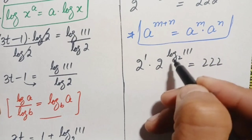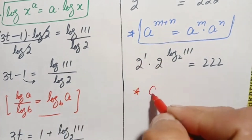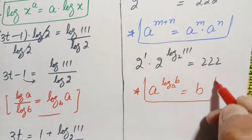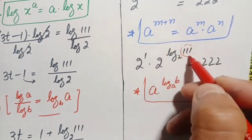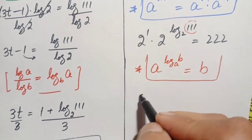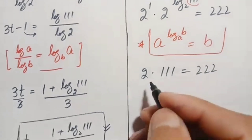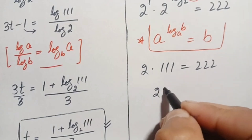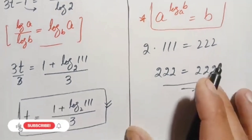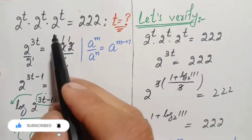For the term 2 raised to the power log of 111 with base 2, we use the result: a raised to the power log of b with base a equals b. So this whole term equals 111. The equation becomes 2 raised to the power 1 — which is simply 2 — times 111 equals 222. Since 2 times 111 is 222, both sides are equal, confirming that t equals (1 plus log₂(111)) divided by 3 is the exact and correct value.